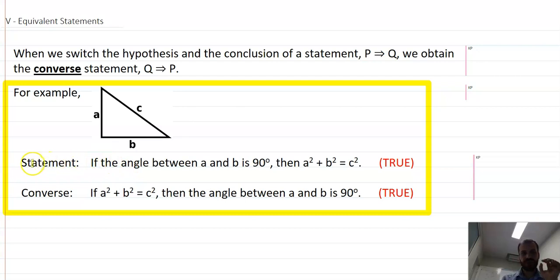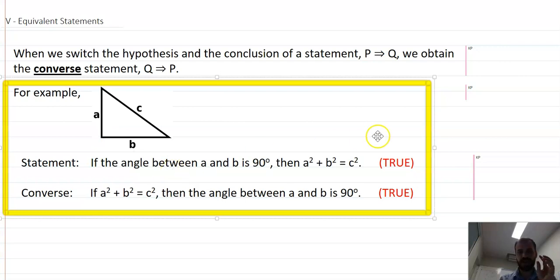Classic right angle triangle here. The statement is, if the angle between A and B is 90 degrees, then A squared plus B squared equals C squared. So that's P implies Q, the angle is 90 degrees, then A squared plus B squared equals C squared. The converse says if A squared plus B squared equals C squared, then the angle between A and B is 90 degrees.